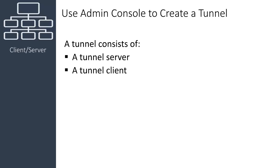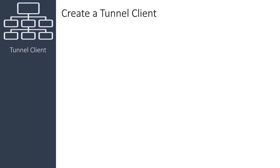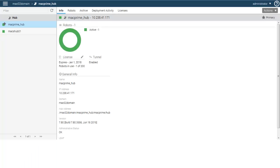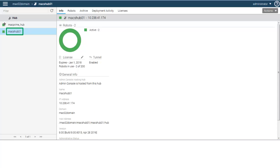The tunnel client connects to a tunnel server. A hub can have many tunnel clients, but only one tunnel server. I will create a tunnel client on a secondary hub using Admin Console. I log into Admin Console as the administrator and select the secondary hub.